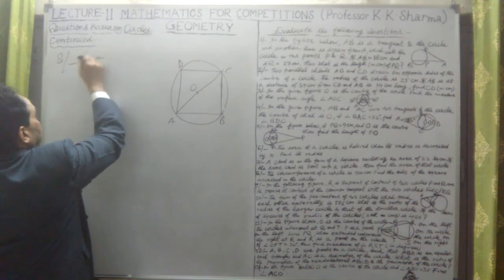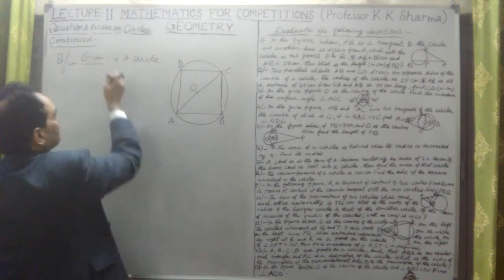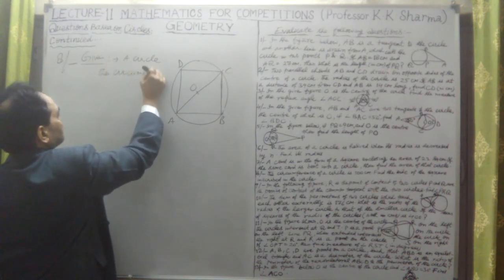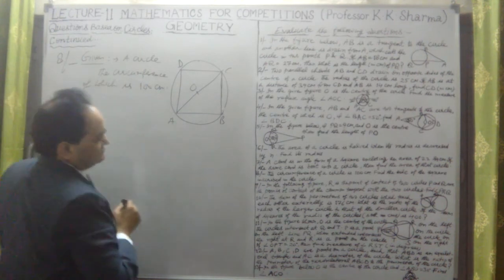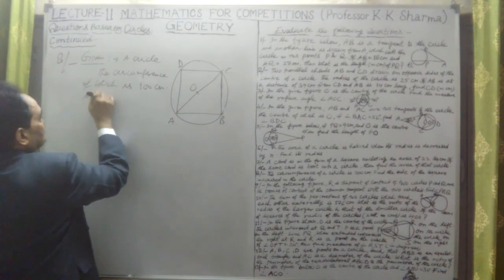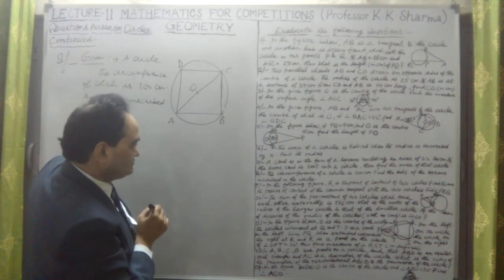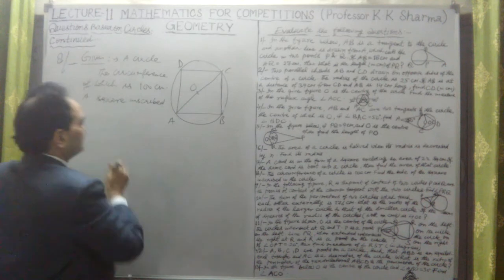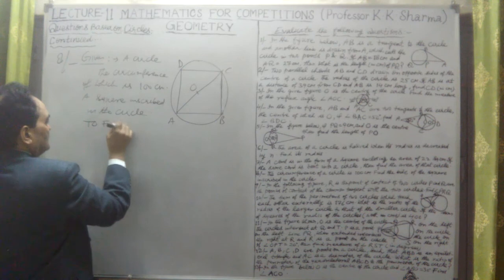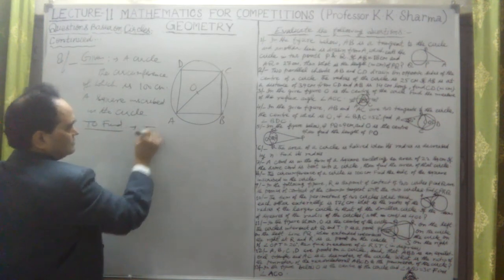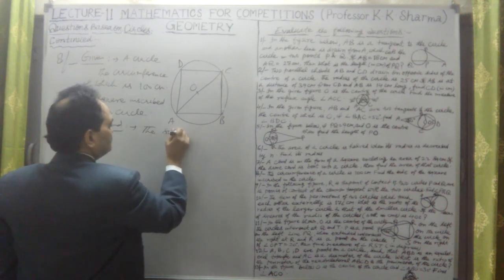Given: a circle whose circumference is 100 centimeters, and a square inscribed in the circle. We need to find the side of the inscribed square.